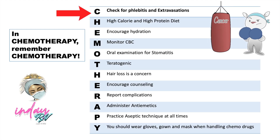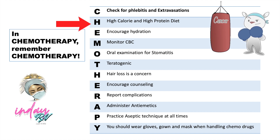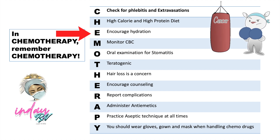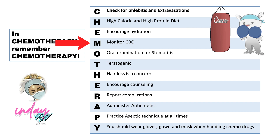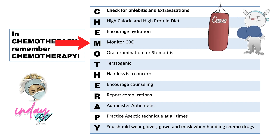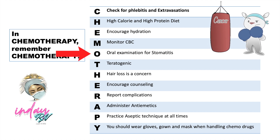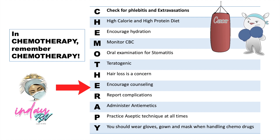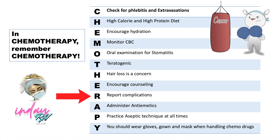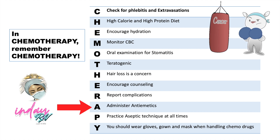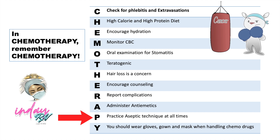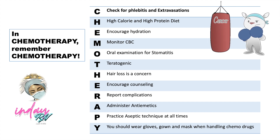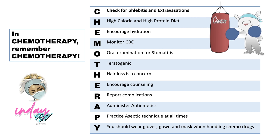Also remember the mnemonic CHEMOTHERAPY: C — check for phlebitis and extravasation; H — high calorie and high protein diet; E — encourage hydration; M — monitor CBC, because of thrombocytopenia, anemia, and neutropenia, all seen in the complete blood count; O — oral examination for stomatitis; T — teratogenic; H — loss of hair is a concern, remember alopecia; E — encourage counseling, remember self-esteem issues; R — report complications, especially abnormal lab results, any bleedings, and fatigue; A — administer antiemetics; P — practice aseptic technique at all times because the patient has neutropenia, and wear gloves, gown, and mask when handling chemotherapeutic drugs to protect yourself.